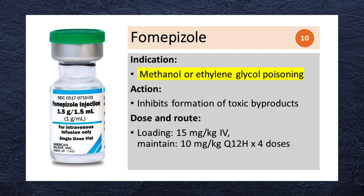Fomepizole is indicated for methanol or ethylene glycol poisoning. It inhibits the enzymes involved in the metabolism of methanol and ethylene glycol, preventing the formation of toxic byproducts. It is administered as a loading dose of 15 mg/kg IV, followed by maintenance doses of 10 mg/kg every 12 hours for 4 doses.